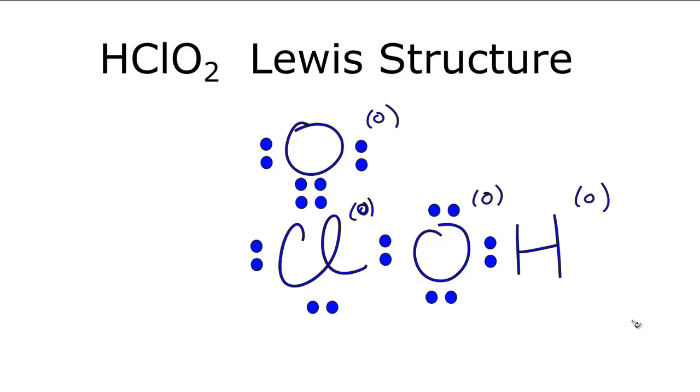So that brings us to the point that we have formal charges of zero, and oxygens, they have to have eight and obey the octet rule, but chlorine, it can have more, and it does. And we have the Lewis structure for HClO2 here.